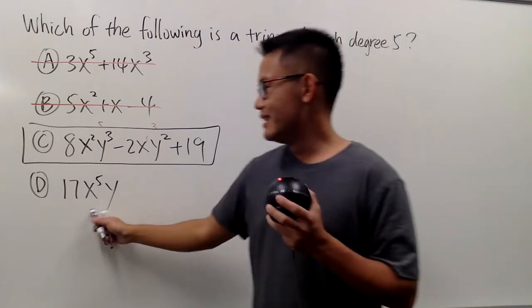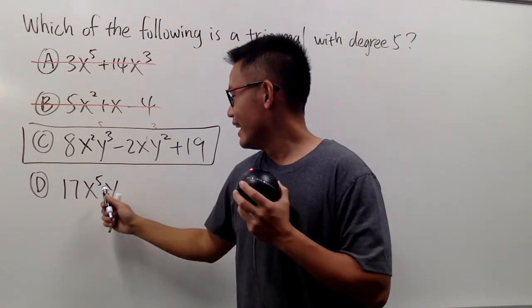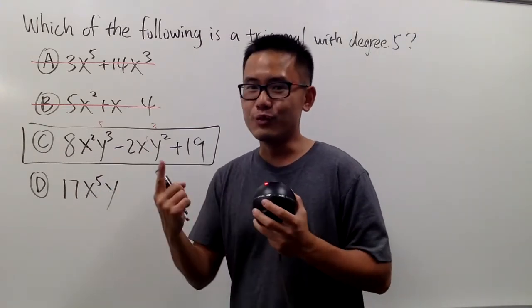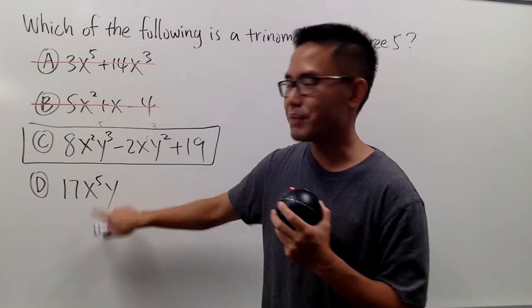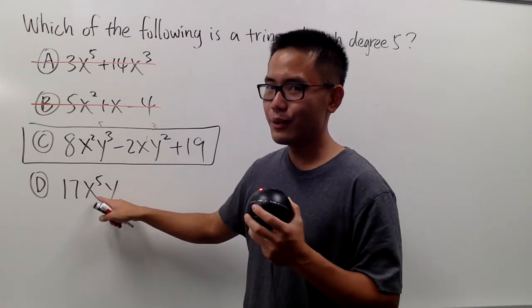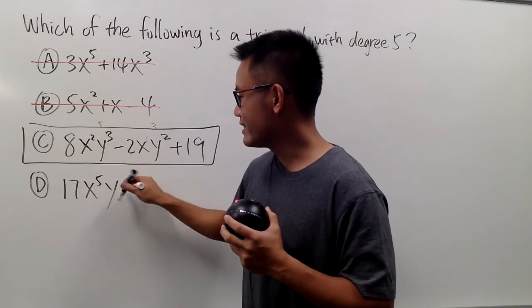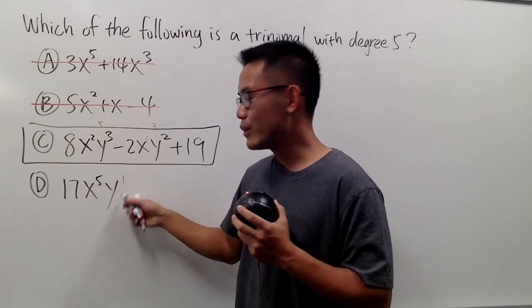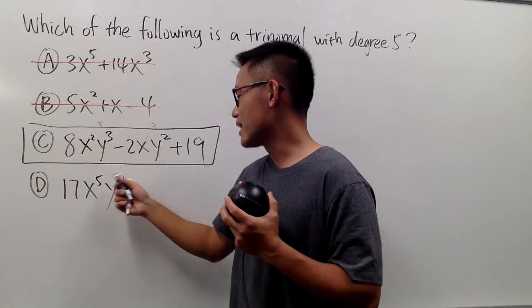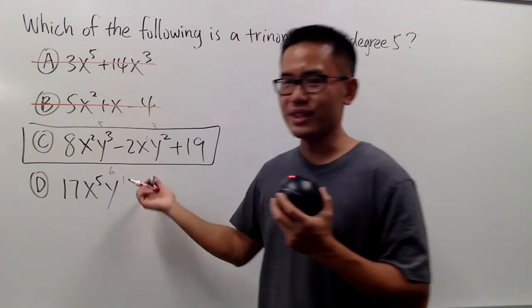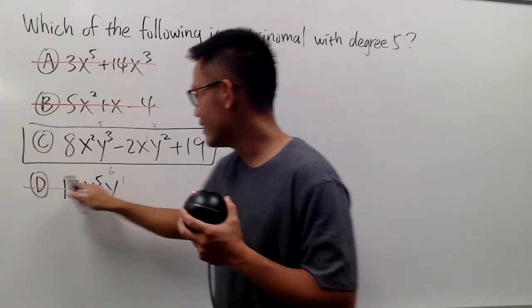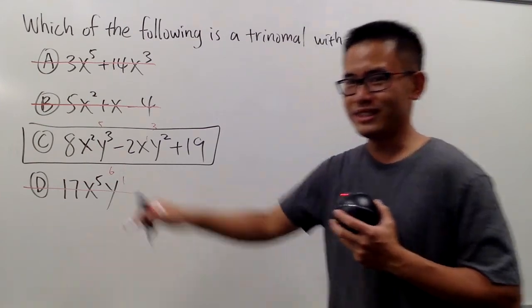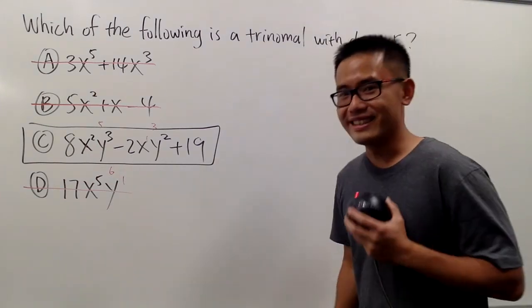Lastly, this right here, 17x to the fifth power of y, we only have one term. And you see, even though we have 5, the degree here is actually 6, because this is y to the first power. 5 combined with 1, together 6 for the degree. But anyway, this is only one term, so of course it cannot be the answer. C is the answer, and that's it.